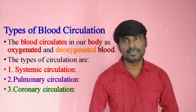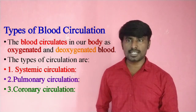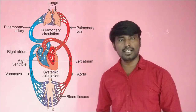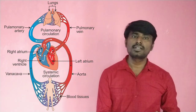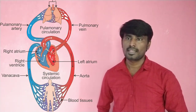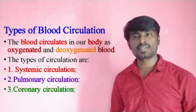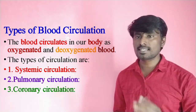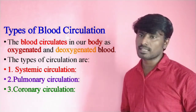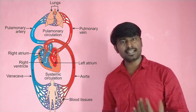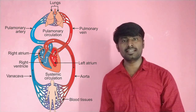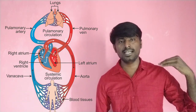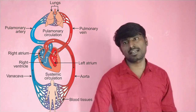Next — types of blood circulation. Blood circulates in our body as oxygenated and deoxygenated blood. There are three types of circulation: first, systemic circulation; second, pulmonary circulation; third, coronary circulation. In systemic circulation, oxygenated blood is supplied to all body parts from the left ventricle and returned as deoxygenated blood to the right atrium.